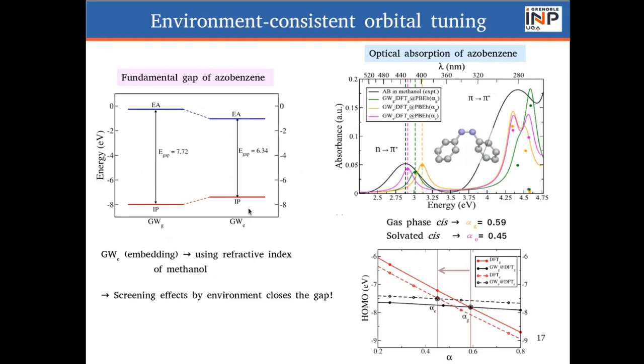This is the GST part, and then both the GST and GW changed. And so, we have a new value of alpha, which is lower, alpha E. And when we do this BSE calculation, you have a very good match of the n to pi-star and pi to pi-star excitations.